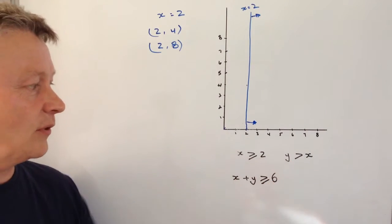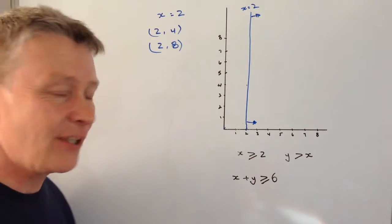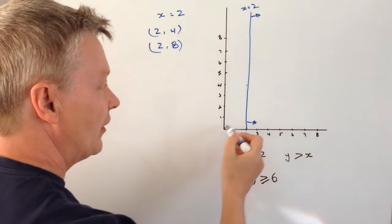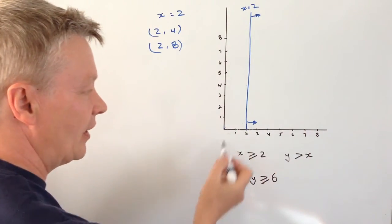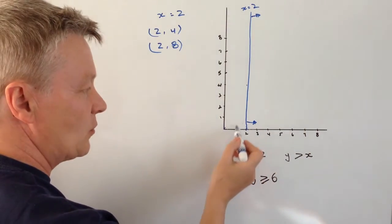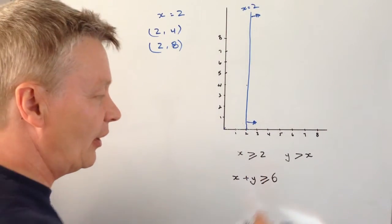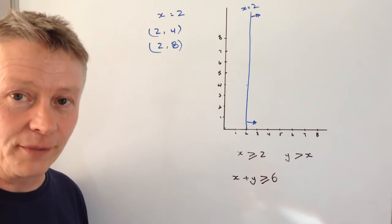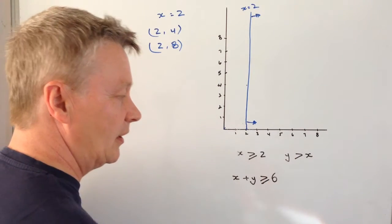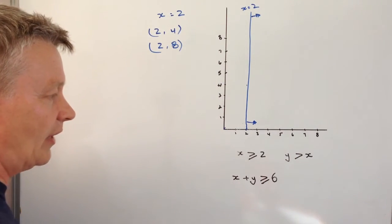Next one is this one. Y is greater than x. Well, y equals x is a line that goes diagonally across like this where when x is 1, y is 1, where x is 2, y is 2 and so on. However, as I mentioned before, I'm going to draw that as a dash line because it doesn't include the value of x.